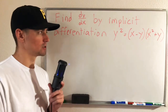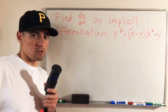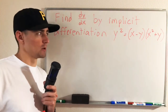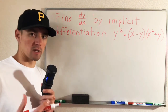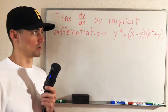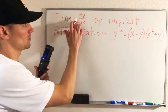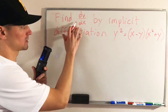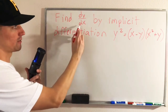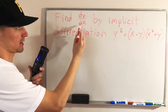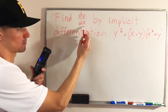Let's go ahead and jump into this problem. So normally with an implicit differentiation problem, the first thing we do is take the derivative with respect to x of both sides of our equation. We're looking for dy/dx, so that tells us we're going to have to take the derivative with respect to x because we have a dx on the bottom here.